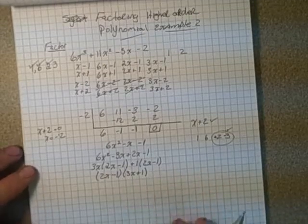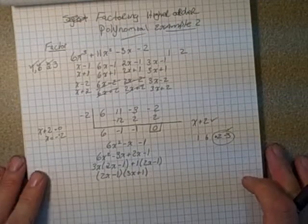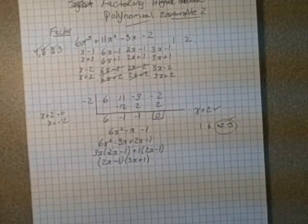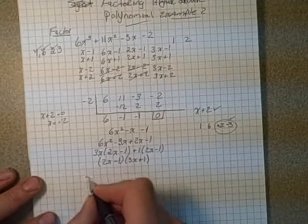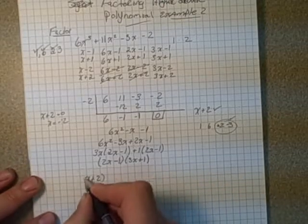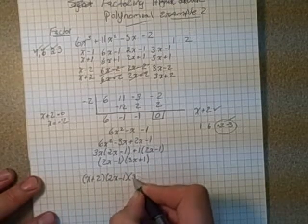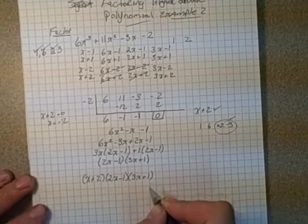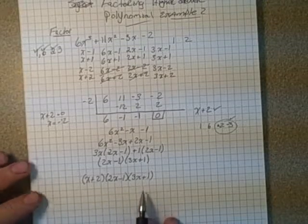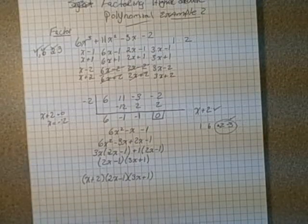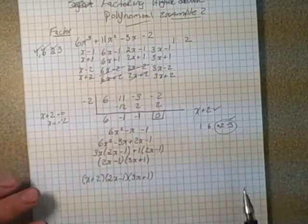If we know that, we now know our three possible factors here for this question. Our factors are X plus 2 times 2X minus 1 times 3X plus 1. Those are the three factors. If we wanted to, we could check through this. Last time I never did a check, but if we do a manual check, see if we can come up with this here.